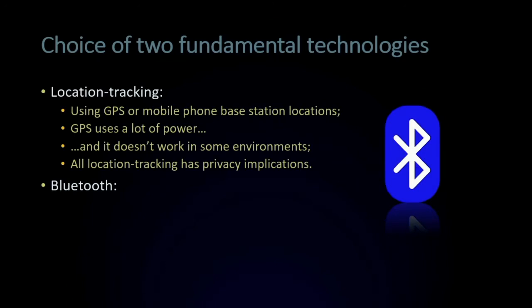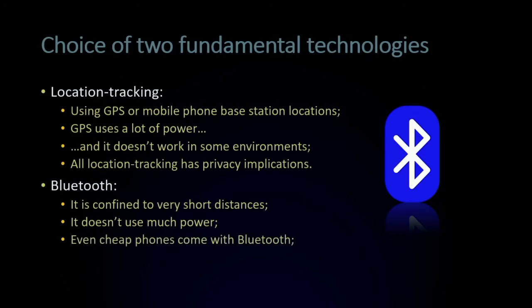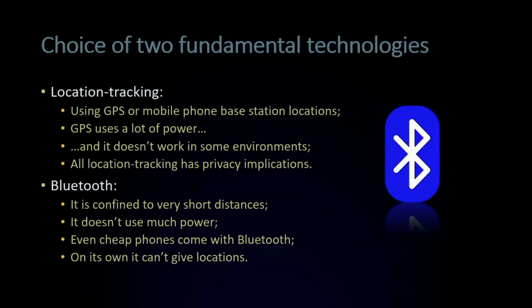The alternative is Bluetooth. The good news is it's confined to very short distances — five to ten meters is pretty much the limit of a Bluetooth transmission. It doesn't use much power; a mobile phone with Bluetooth running all day for headphones or keyboards doesn't drain the battery much. It's so cheap to include that pretty much every mobile phone now has Bluetooth. The drawback for contact tracing is Bluetooth on its own can't give you a location; you have to combine it with a location tracking technology if you want to know where people are.